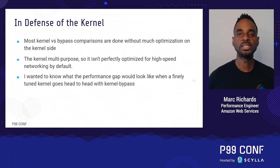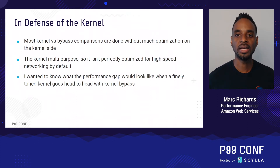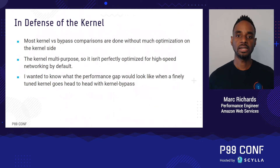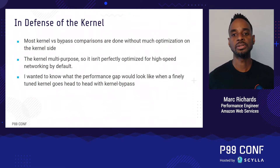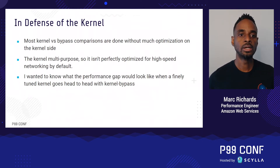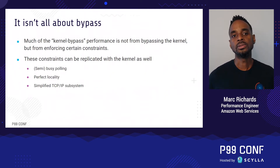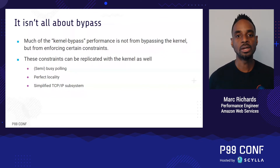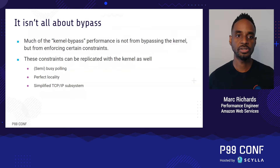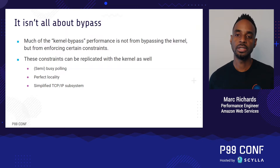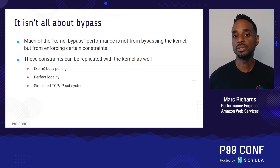The Linux kernel is designed to be fast, but it's also designed to be multipurpose, so it isn't perfectly optimized for ultra-high-speed networking by default. Kernel bypass technologies like DPDK take a single-minded approach to networking performance — an entire network interface gets dedicated to a single application, and aggressive busy-polling is used to achieve low latency. For this project, I wanted to know what the performance gap would look like when a finely tuned kernel goes head-to-head with kernel bypass in a no-holds-barred fight. Many of the kernel bypass performance advantages come not from bypassing the kernel, but from enforcing certain constraints that can also be achieved while still using the kernel.